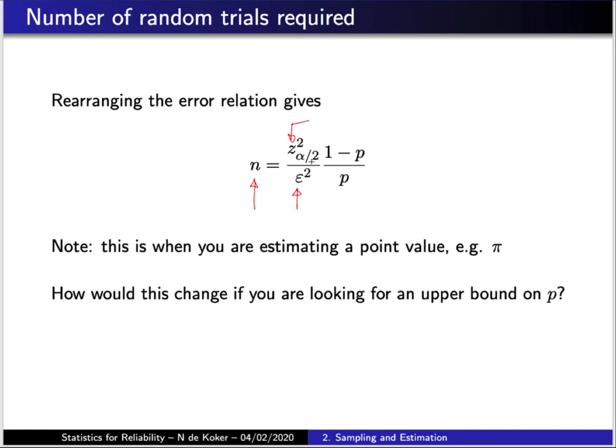So, for example, we might say that we want to know the proportion to within 10% with a 95% confidence interval. So, this then gives us a value for epsilon and this gives us the value for Z of alpha over 2 and then depending on what we suspect this value will be we can determine the value of N. Now, in a reliability context P is very often quite a small value so let's say it's about 10 to the negative 4 which translates into the requirement for N being quite large so in general you'll need N to be around a million to 10 million.